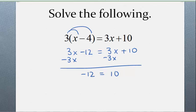Negative 12 is not equal to 10. So that means this is impossible — there's no way that negative 12 can ever equal 10. It means the thing you started with could never be equal. So this is a contradiction, and that means there are no solutions.